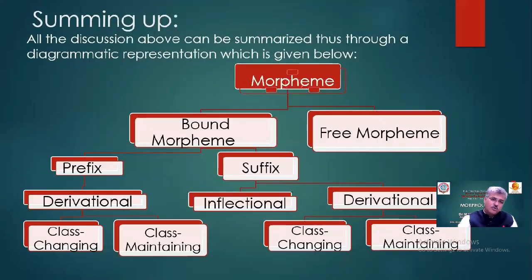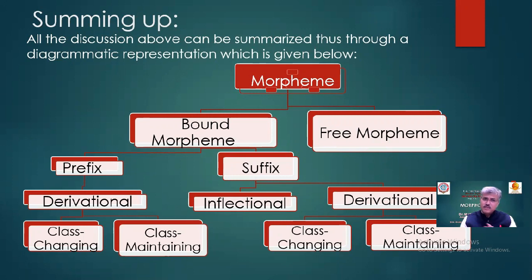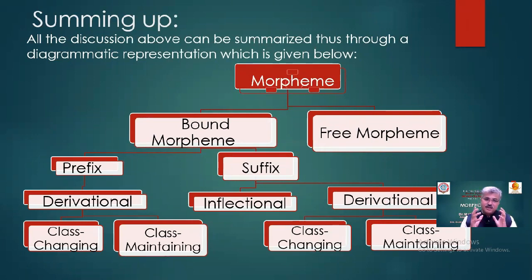Dear learners, now we will sum up. Whatever we have discussed in this video on Morphology is summarized diagrammatically. First we studied morphemes and morphology — the study of words. There are two types of morpheme: free morpheme and bound morpheme. In bound morpheme there are two types: prefix and suffix. Derivational prefix is divided into class changing and class maintaining. Similarly, suffix is divided into two types: class changing and class maintaining.